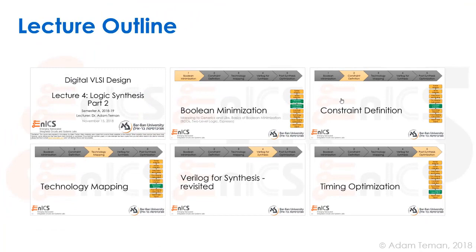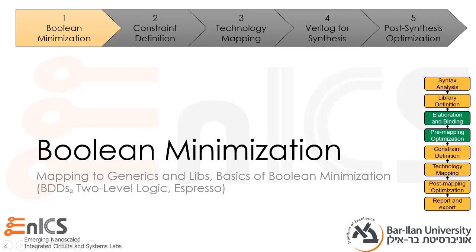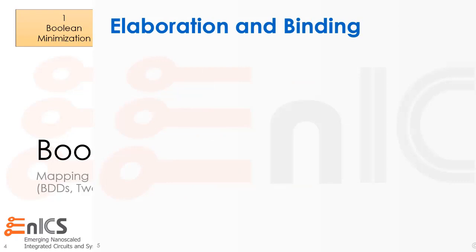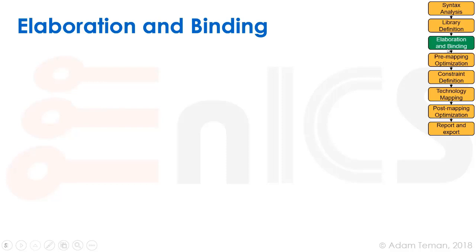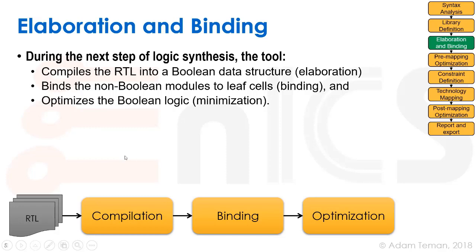We start with Boolean minimization, which includes mapping to generics and libs, basics of Boolean minimization, BDDs, two-level logic, and Espresso. Thanks to Rob Rutenbar who gave a great course on Coursera which I based a lot of this on. The next stage in our flow is elaboration and binding — we'll discuss what happens at this stage and then go into some of the algorithms. What we're going to do is take our RTL and compile it into a Boolean data structure. That's called elaboration.